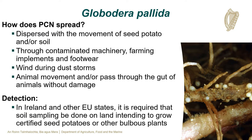Globodera palida can be spread by a variety of methods, including dispersal with the movement of seed potato and/or soil, through the movement of contaminated machinery, farming implements and footwear, dispersal via wind during dust storms, and the movement of animals or the passage of PCN through the gut of animals without damage. In Ireland and other EU member states, soil sampling is required on land intending to grow certified seed potatoes or other bulbous plants to detect or confirm the presence of Globodera palida.